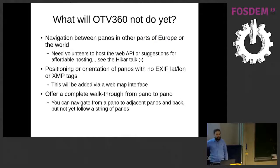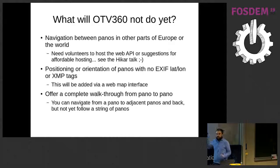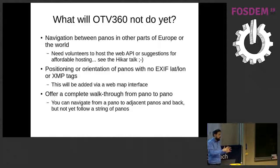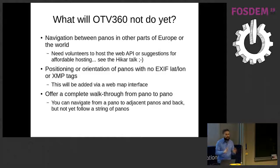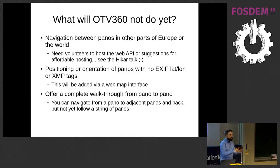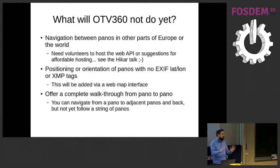What won't it do yet? At the moment there's no navigation in other parts of Europe or the world. If your panorama doesn't have EXIF metadata, that's as far as it goes for now. The next thing I'm going to add is a Leaflet web map interface to allow panoramas to be positioned manually — you'll be able to position your panorama on a map and rotate a photo icon to point in the correct direction. It also doesn't offer a complete walkthrough yet from panorama to panorama — you can start at one and go to adjacent ones, but you can't yet go from A to B to C to D to E sequentially, though it shouldn't be too difficult.